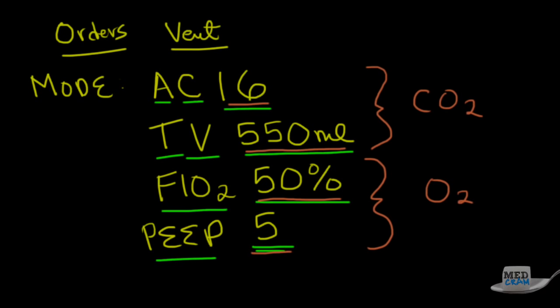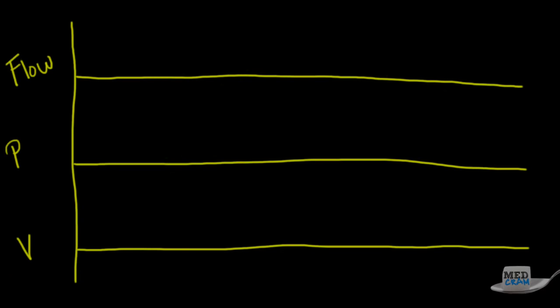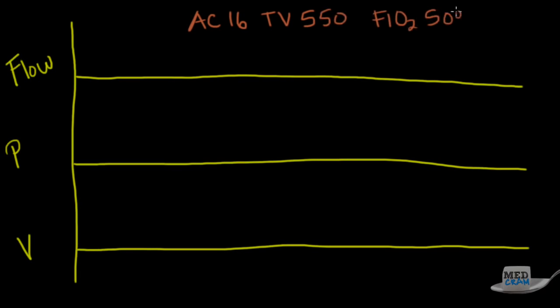If there are any questions about blood gases, refer to the acid base lectures on interpretation. Now let's look at what a pressure-volume-flow graph looks like for AC mode ventilation. Our settings are: AC 16, tidal volume 550, FiO2 50%, and PEEP of 5.